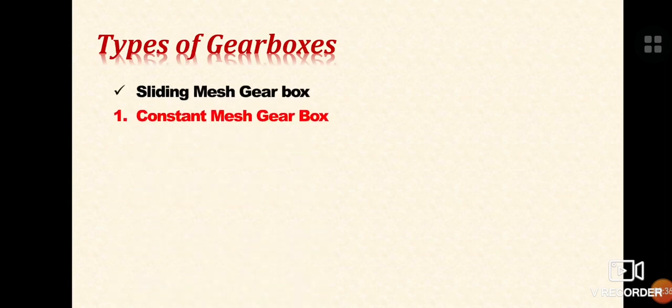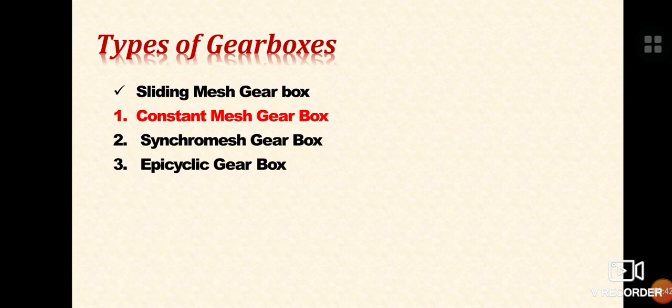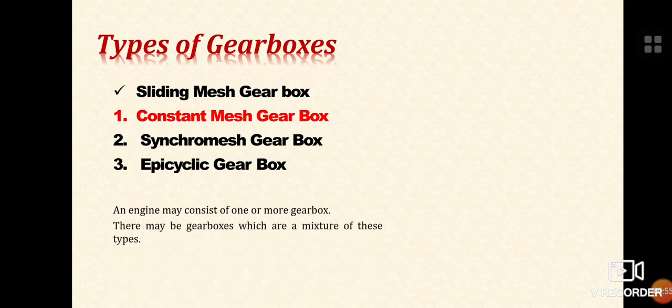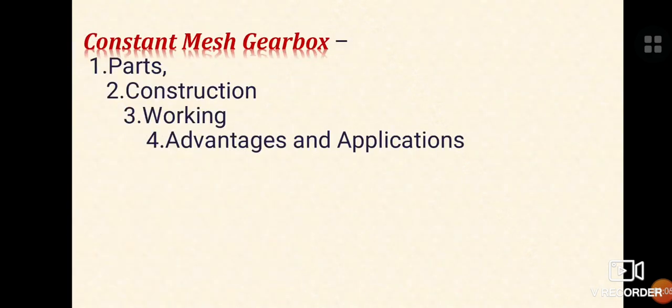Let's start with the types of gearboxes. There are four types: sliding mesh gearbox, constant mesh gearbox, synchromesh gearbox, and epicyclic gearbox. As discussed, we will majorly focus on the constant mesh gearbox. An engine may consist of one or more gearboxes, and there may be gearboxes which are a mixture of these types.